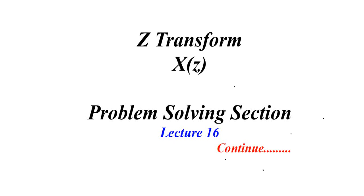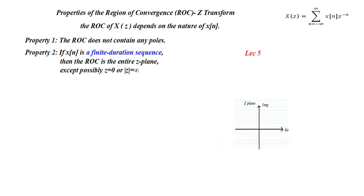In this lecture we will discuss the properties of ROC, region of convergence. The first property is that the ROC does not contain any pole. If you indicate a pole in the z-domain — poles are indicated by a cross — the ROC will not contain that point. The ROC can be outside or inside a given pole.